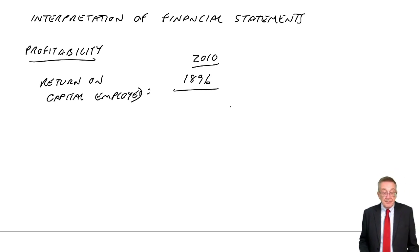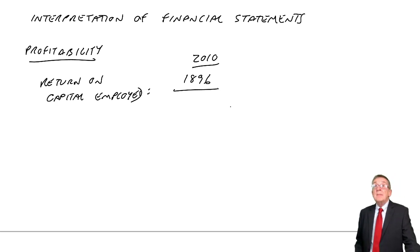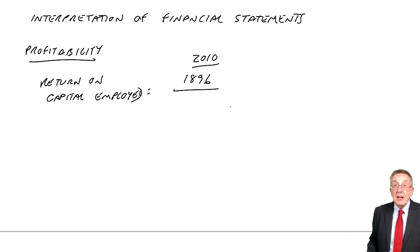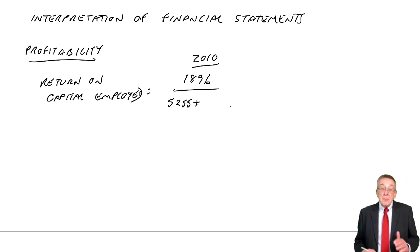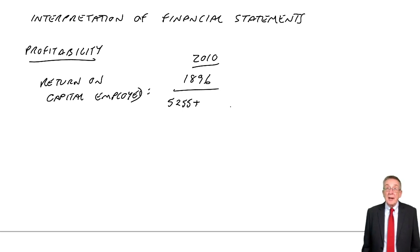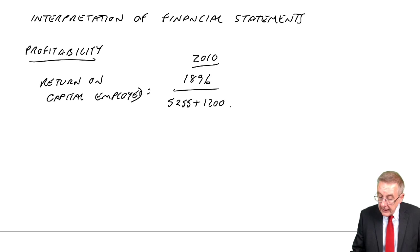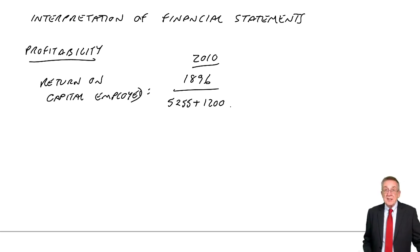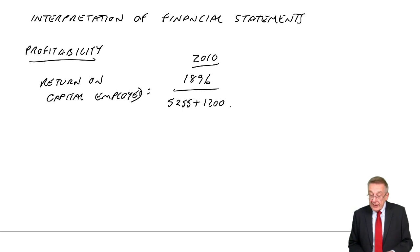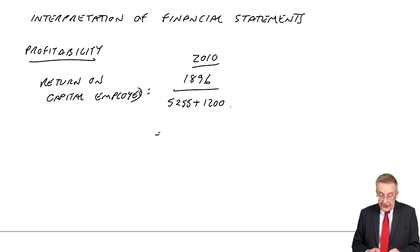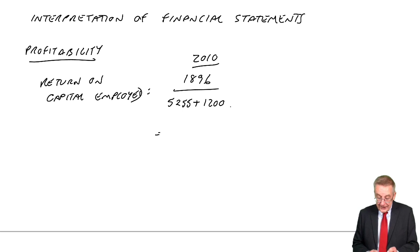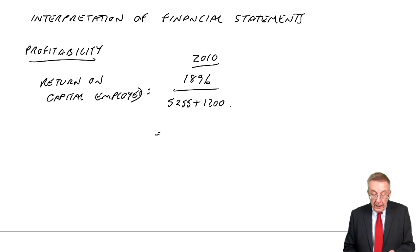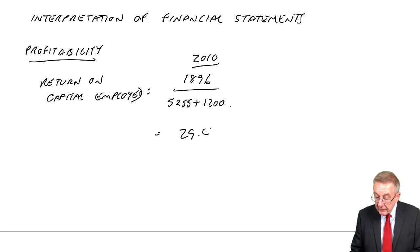What I mean by the long-term money in the business — in 2010, the long-term money they've raised is the share capital and reserves, the money from shareholders, 5,255, plus the long-term borrowing, the non-current liabilities, 1,200. That's the total money invested in the business. What percentage profit is it giving? Well, 1,896 divided by the total of those two is 6,455. As a percentage, I get 29.4%.